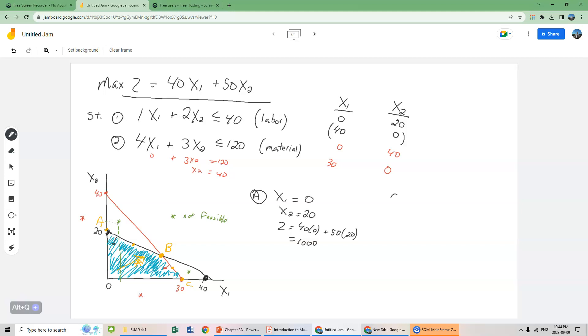We're going to change to point C first because it's easy to determine the coordinates at point C. x1 is 30 and x2 is 0. So putting that back into that objective profit function, we have 40 times 30 plus 50 times 0. So this gives us 1200. More profit than if we were producing at point A.